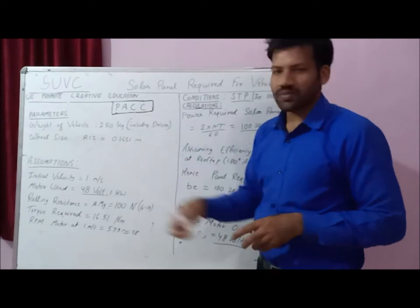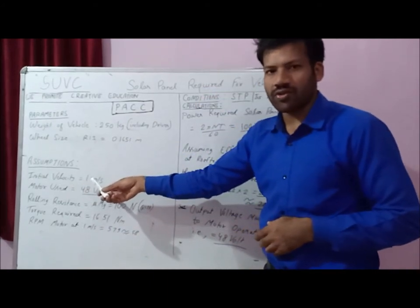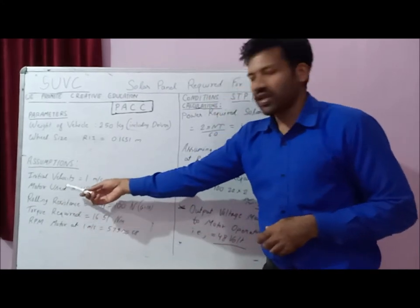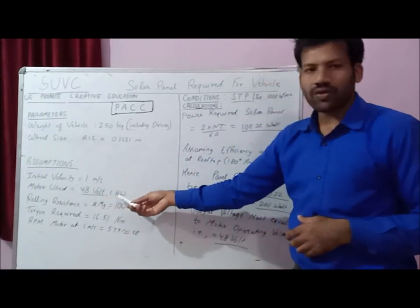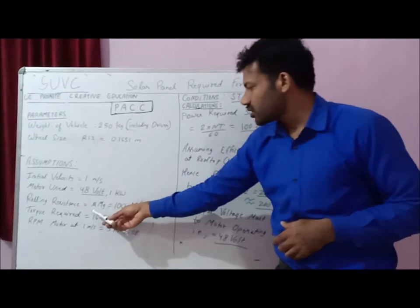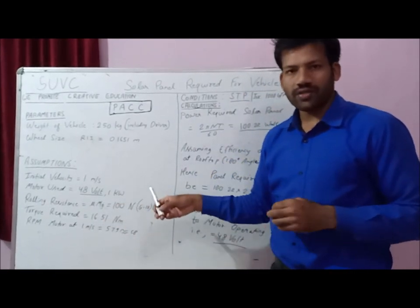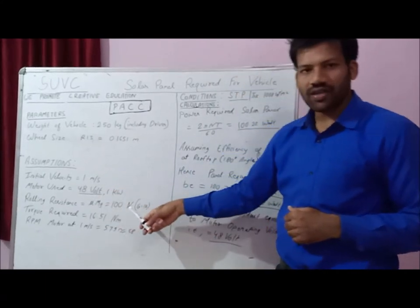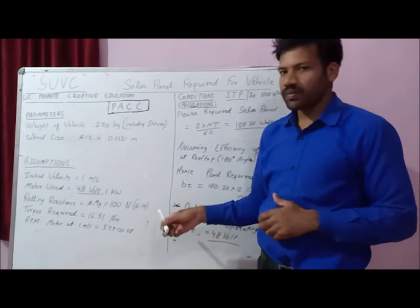The second step is Assumptions. My initial velocity to run directly on the solar endurance round is 1 meter per second, and the motor used for power transmission is a 48-volt, 1 RPM motor. The rolling resistance is mu times mg, with a coefficient of rolling resistance of 0.04. Multiplying all the mg and mu factors, we find that 100 newtons of force is required to propel the vehicle.